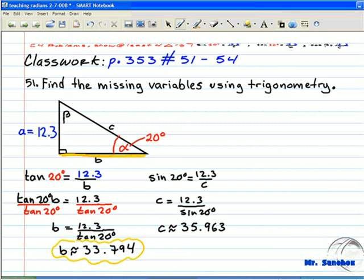Up to 3 decimals, the approximate answer is 35.963. We just found the distance of the hypotenuse of the right triangle.